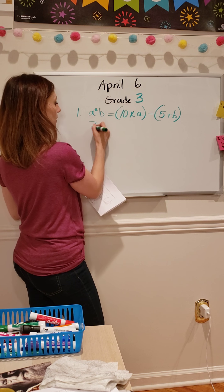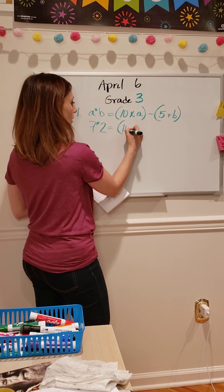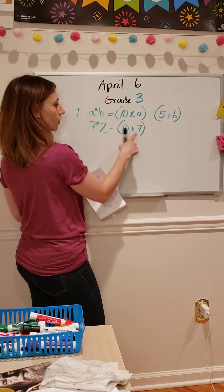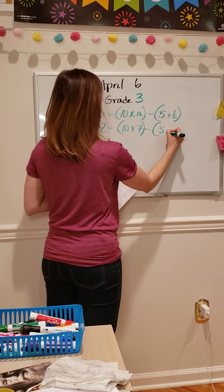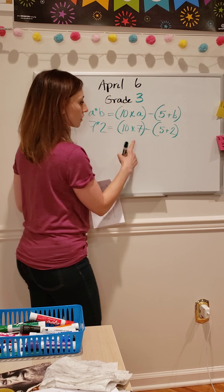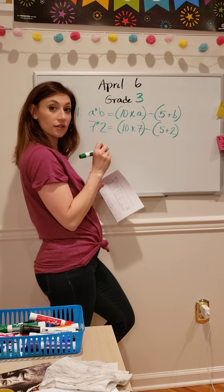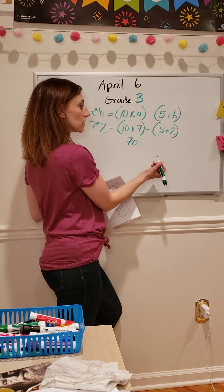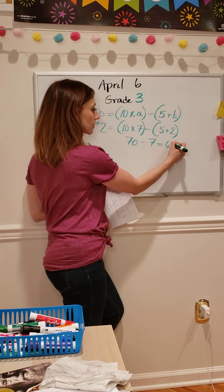They give us an example: 7★2 means 10 times 7 — because I put the 7 where the A goes — minus 5, plus 2, because the 2 goes where the B goes. Now that I have numbers in place of letters, I can do the math. 10 times 7 is 70, minus 5 plus 2, which is 7, equals 63.